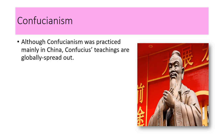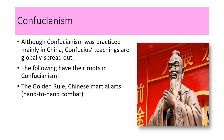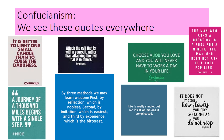Confucianism, while having its roots in China, is globally spread out. These terms have their roots in Confucianism: the golden rule, Chinese martial arts, and hand-to-hand combat. Confucius was against the use of weapons, so his followers developed a fighting technique without the use of weapons. Confucianism was not originally intended to be a religion, but as a social philosophy where people had to get along and make relationships work peacefully. Some famous Confucius quotes we see every day: 'A journey of a thousand miles begins with a single step,' and 'Choose a job you love and you will never have to work a day in your life.'